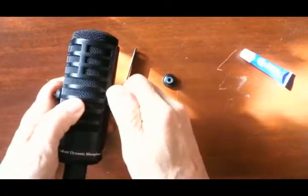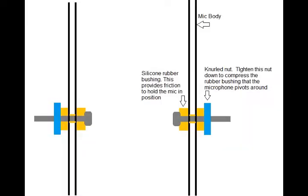So the secret is to remove the thumb screw and the yoke and tighten that knurled nut down tight against the little rubber bushing underneath.